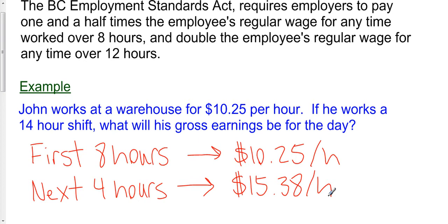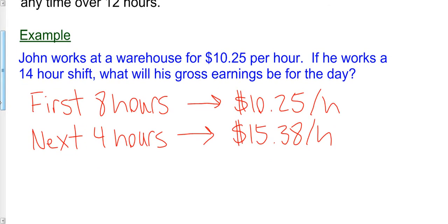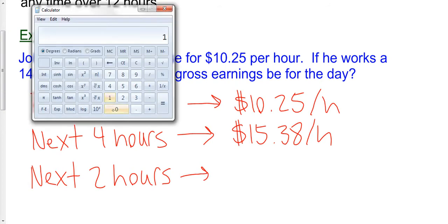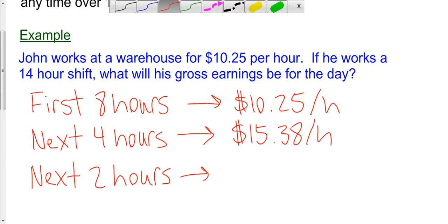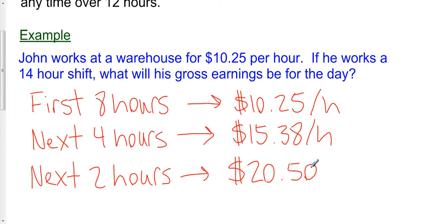That leaves us with two additional hours to bring us up to his 14 hours for his 14-hour shift. So for the next two hours, John has now worked over 12 hours, so he's entitled to double time. So when we double this salary, $10.25, we're going to be multiplying times two, that's what double time is, that's $20.50 an hour.